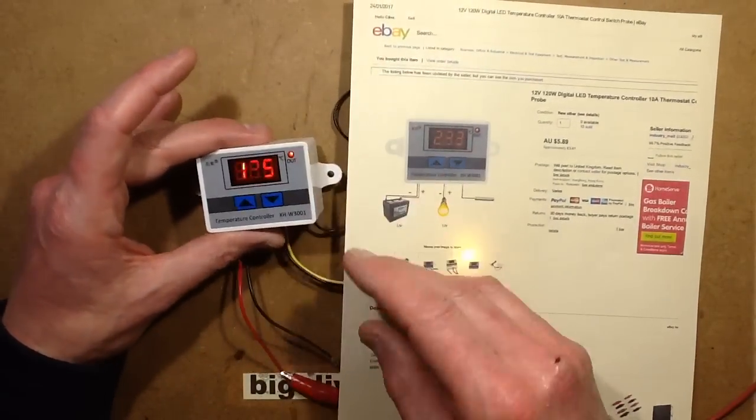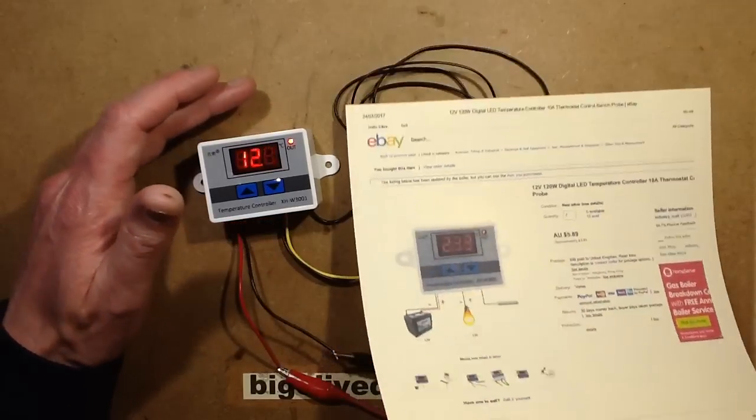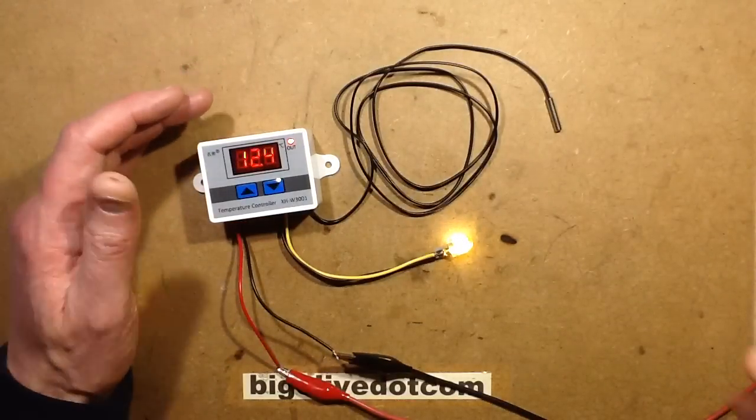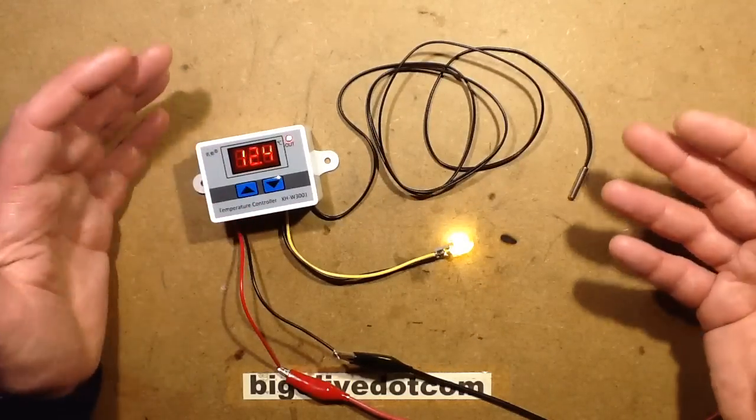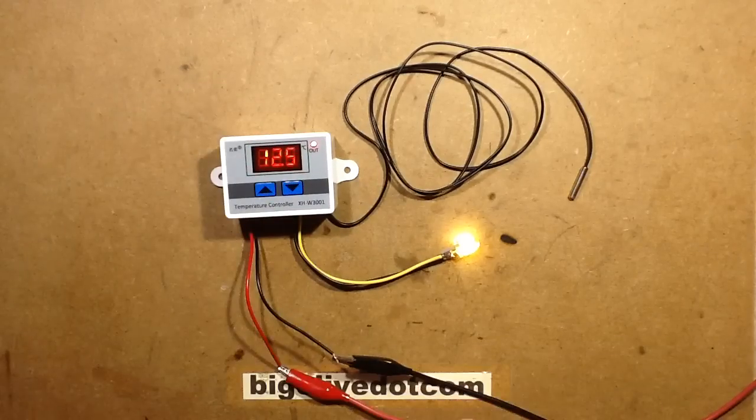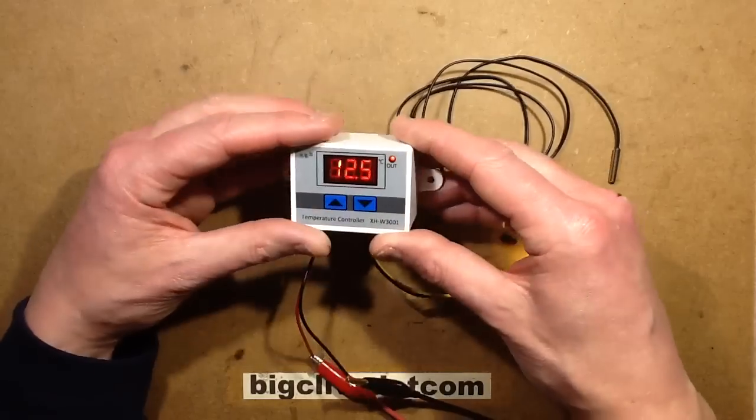So this module, this fully enclosed module, cost £3.61, which is absolute buttons. You think if I was buying just a replacement thermistor in the UK, I'd be paying a lot more than that usually for something like that. But here we have a completely enclosed module.